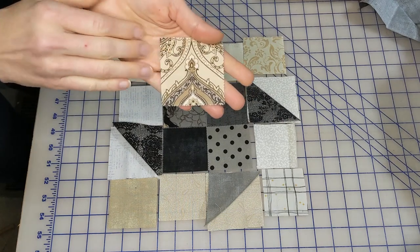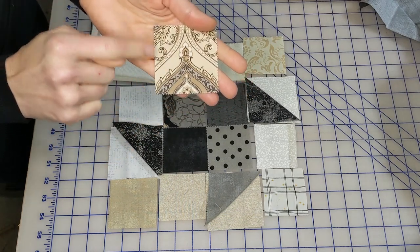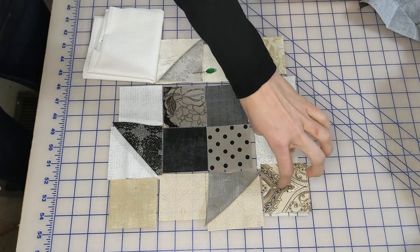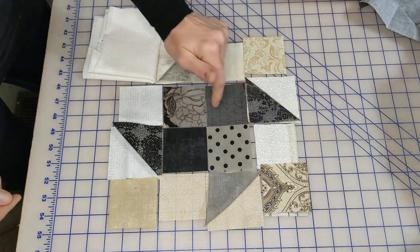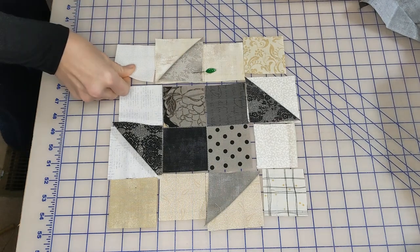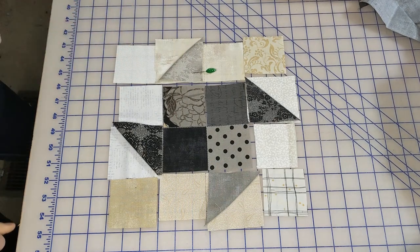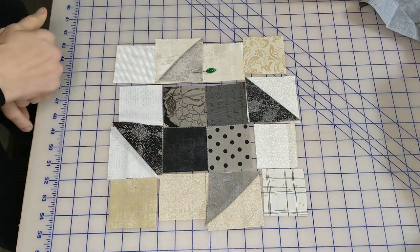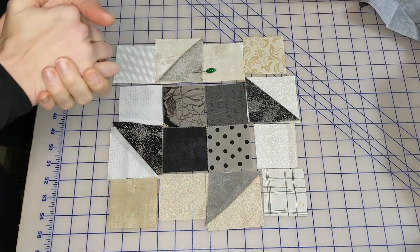We're not going to use this print, and I hate that because it's such a nice little fun print. It's too dark on this corner - it's going to detract from our center, so we're going to use just a simple polka dot. There we go. I think that's a little more balanced. All right, so we're going to get it stitched up and see what we think.